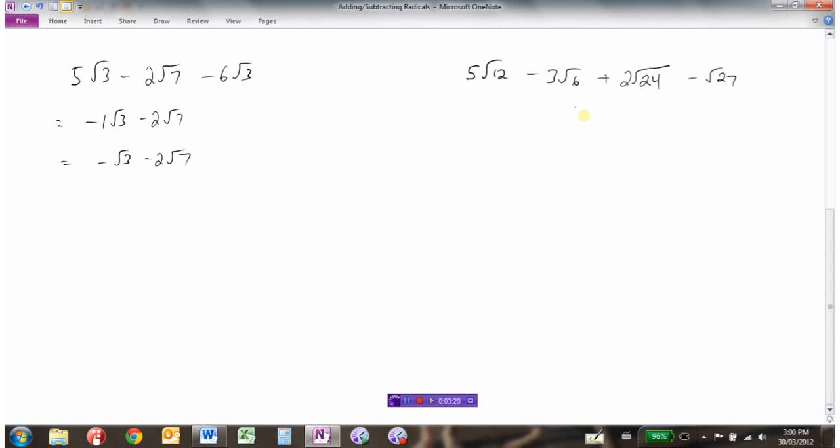Now looking at this one over here, we've got to be a little bit careful. You look at it initially and this is a √12 and a √6 and a √24 and a √27, and it looks like they're all different. But the problem is these radicals aren't in simplest form. The 12 we could break down to 2 and 6 and 2 and 3. So because there's a common factor there, this radical can be simplified.